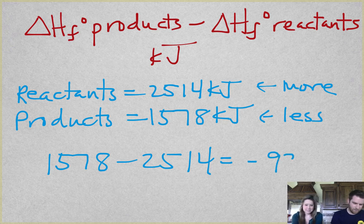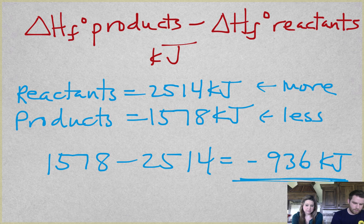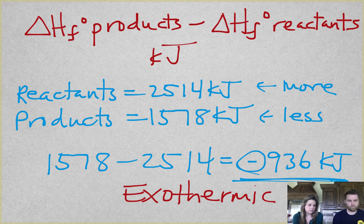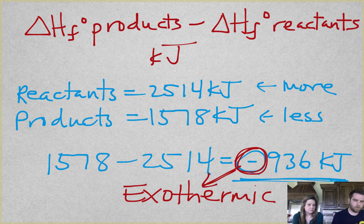What negative number? Negative 936. Negative 936 kilojoules. So anytime you see a negative number, what kind of reaction? It's exothermic. And that's how much energy is released as heat. So negative means exothermic.